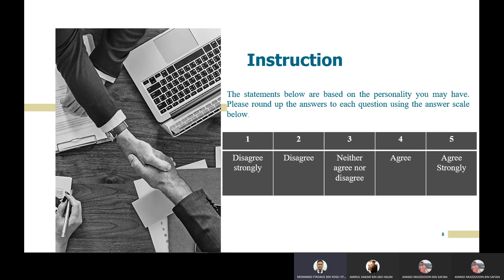If you disagree, circle two. If you neither agree nor disagree, circle three. If you agree with the statement, circle four. If you strongly agree, circle five. This is a paper-and-pencil test; it also has an online version, but we prefer the paper-and-pencil format.